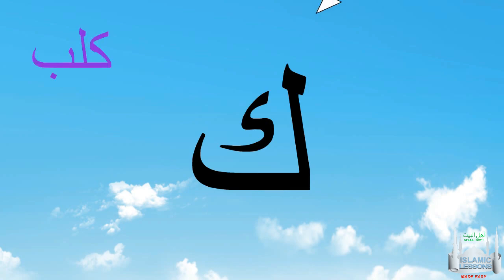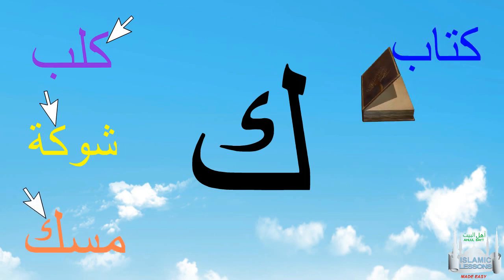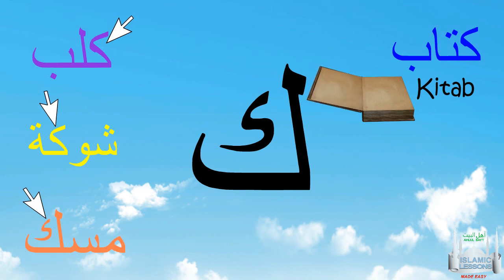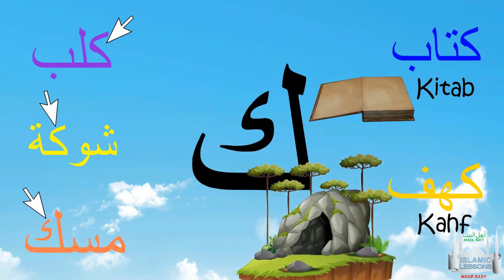This is what Kaf looks like at the beginning, like this in the middle, and like this at the end of a word. Here are some examples: Kaf in the word kitab, which means book, or Kaf in the word kahf, which means a cave.